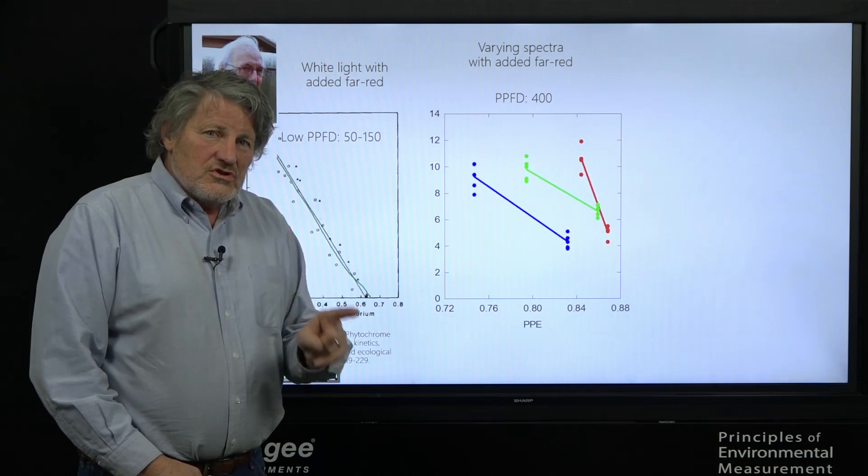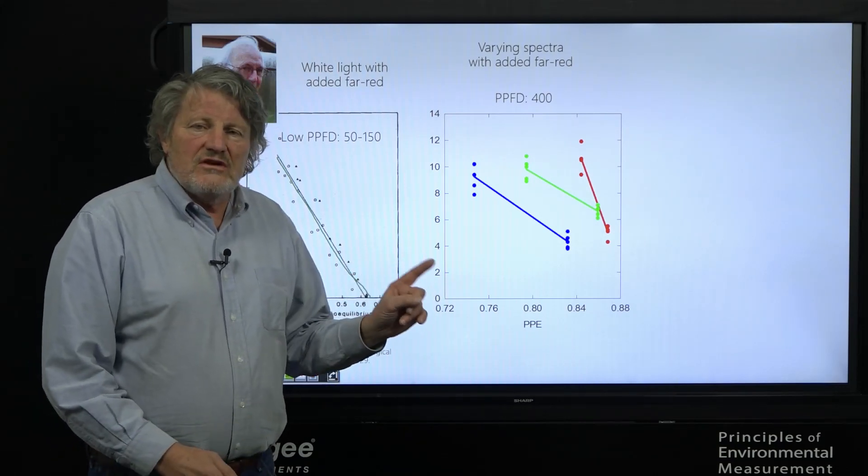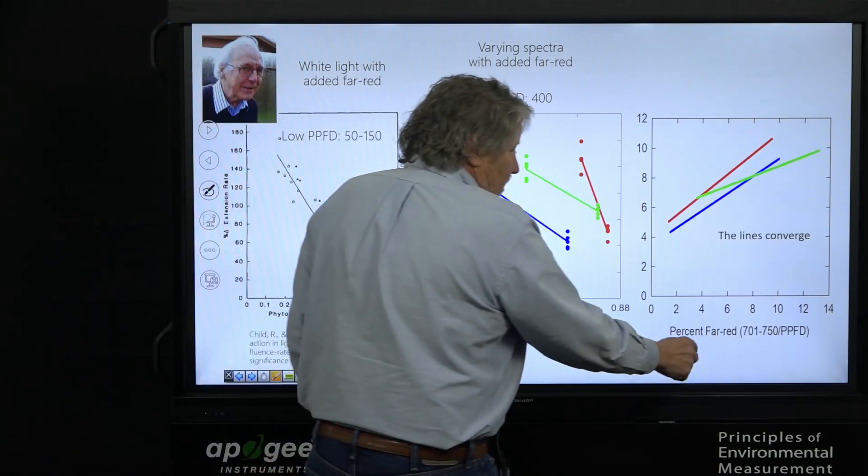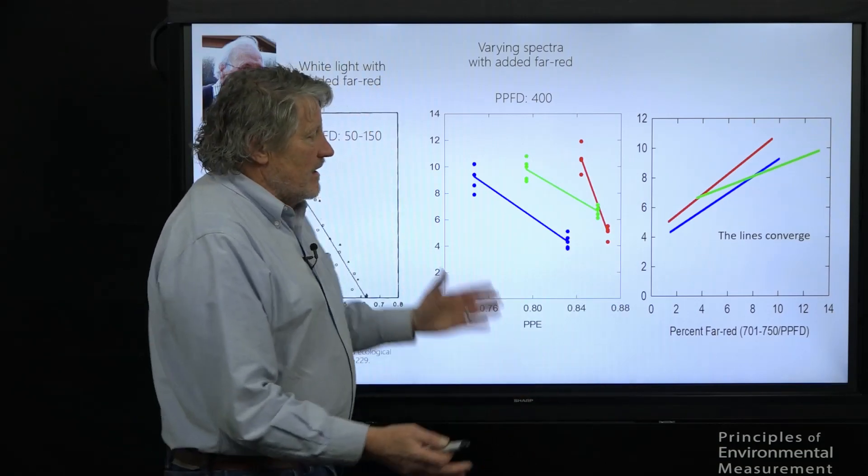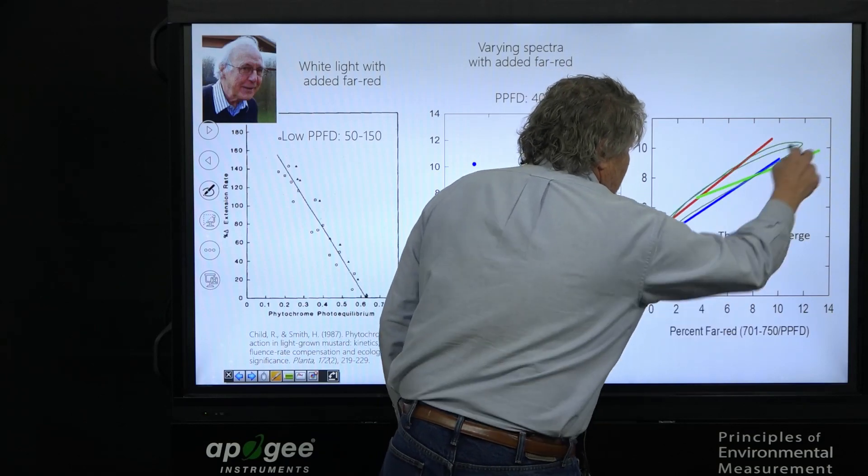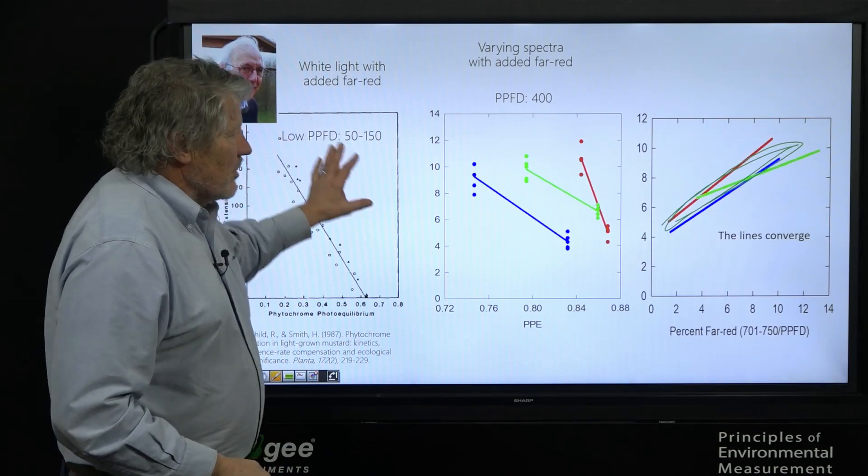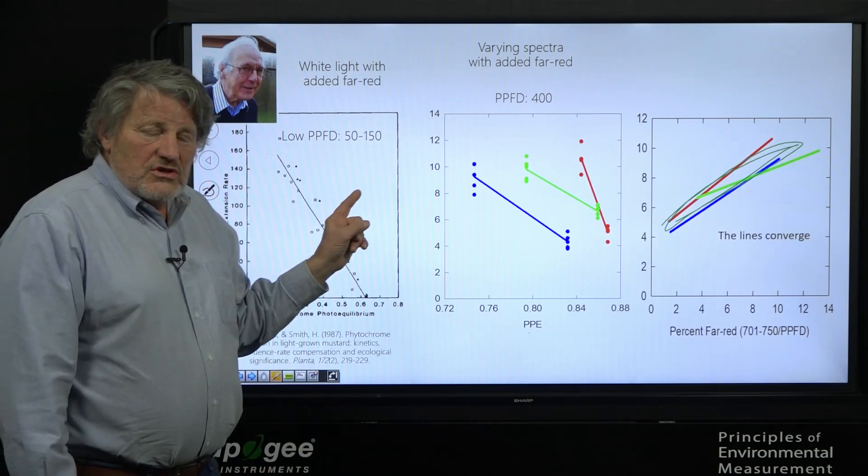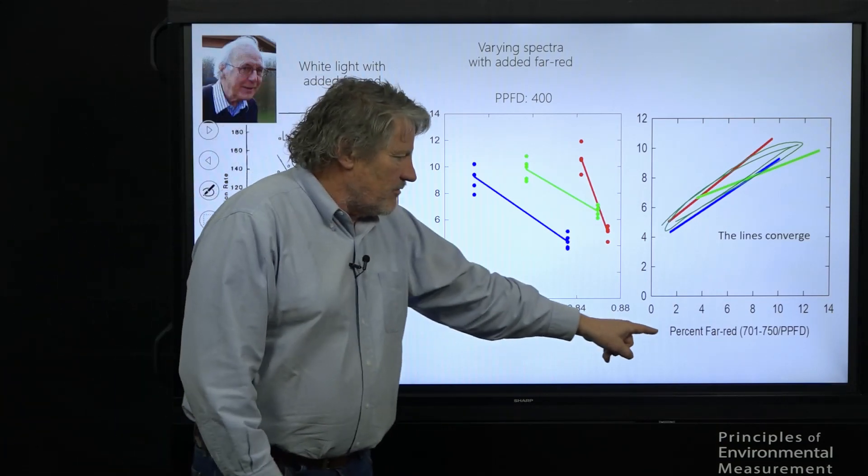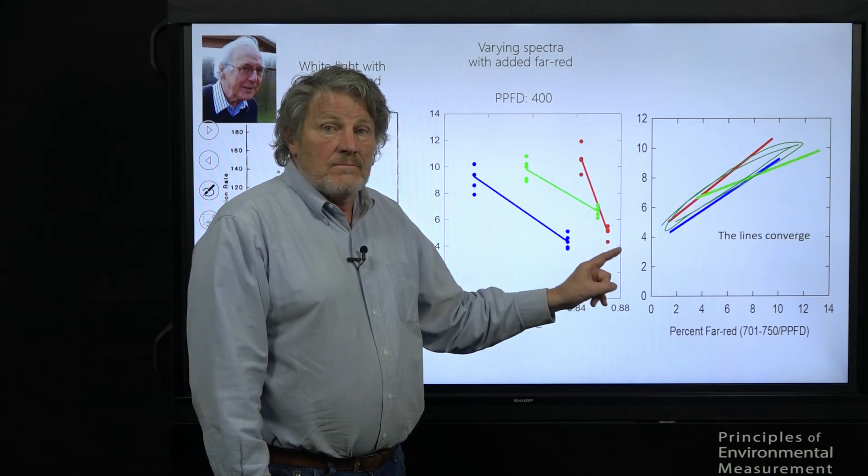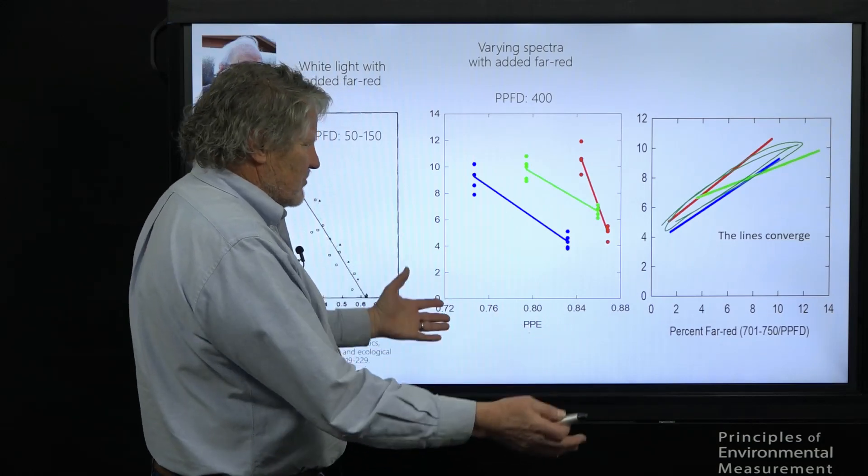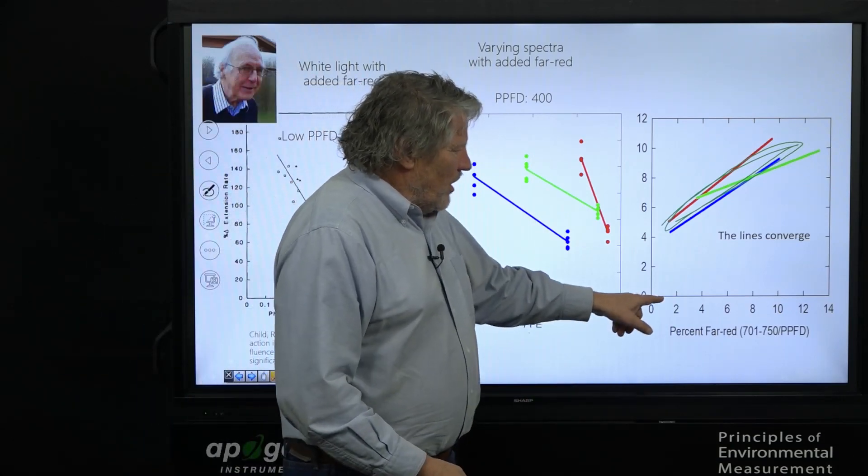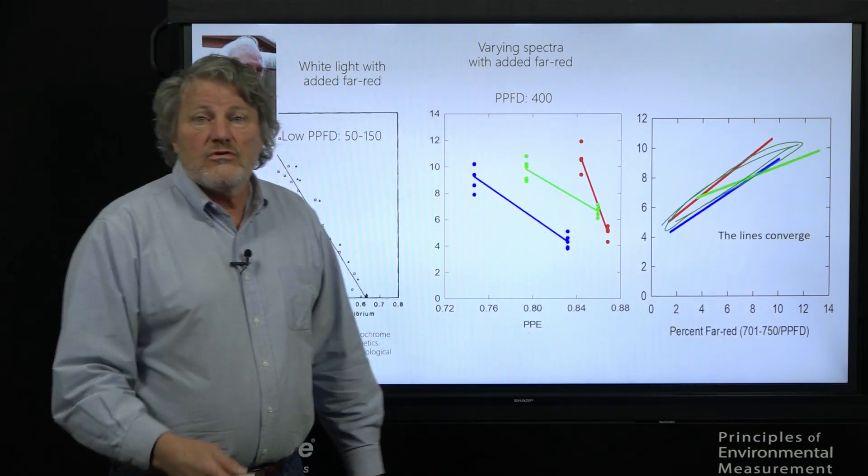What if we took a simpler measurement and we only did percent far red, that original ratio in the first section. What does that look like? Here it is. Percent far red. Far red photons divided by total. Wow. The lines converge. They're not perfect, but we've got a much better estimation of stem elongation than we did from the more complicated phytochrome photo-equilibrium measurement. We've now reproduced this with other species and shown this percent far red does an impressive job of predicting leaf area and stem elongation, and it's real intuitive. And you tell anybody the PPE went from 0.76 to 0.84 and that's hard to know how much far red was in there, but you say it went from 1 to 10 percent. Anyone can understand that. It's a wonderfully intuitive ratio.